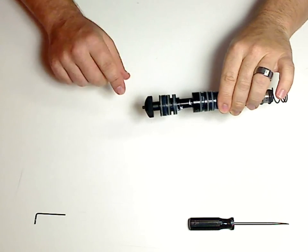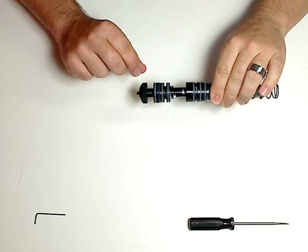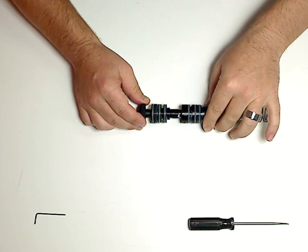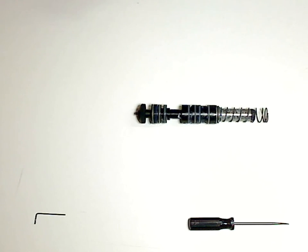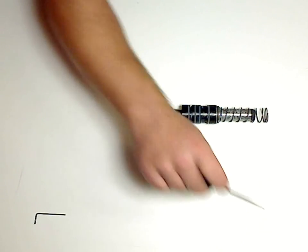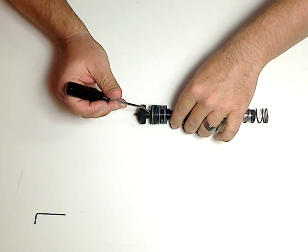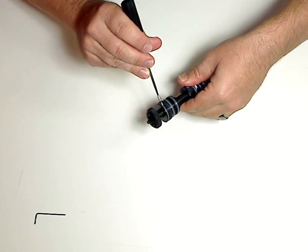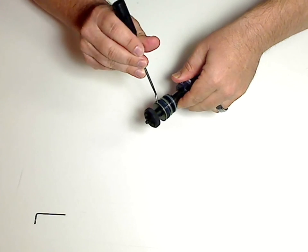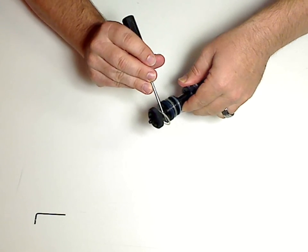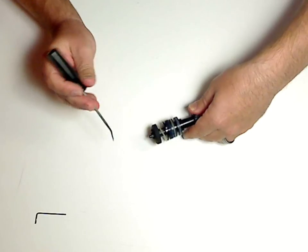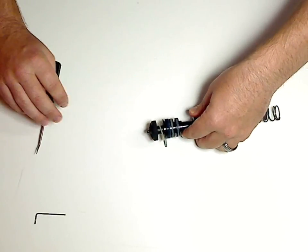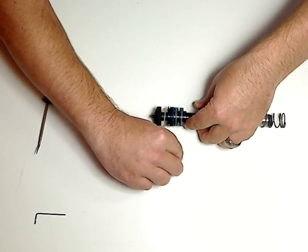Now what we're looking at today is just this back cap here. So to gain access to that we remove just this very back o-ring which will release a pin right there.